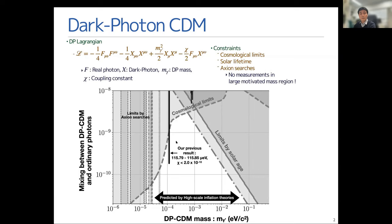We have only our previous result for this very narrow mass range around 115 microelectron volts with the limit for the parameter chi, the upper limit for chi, with 2.0 times 10 to minus 10. So here we are forcing into this fresh, unexplored region.